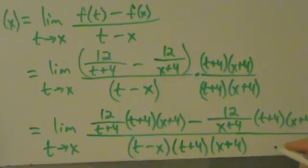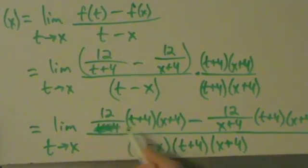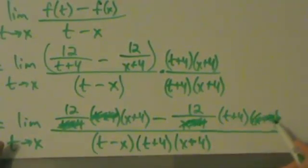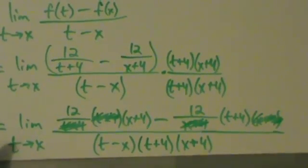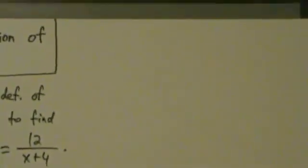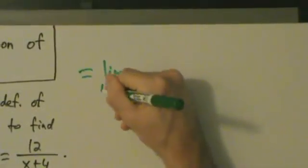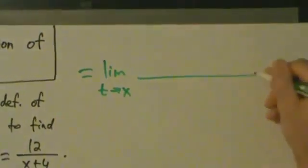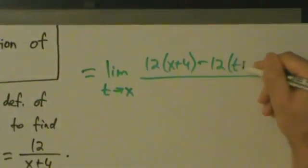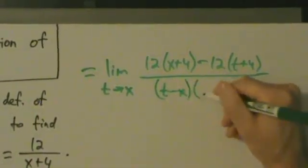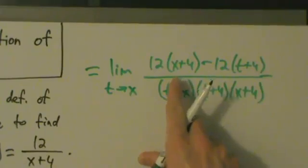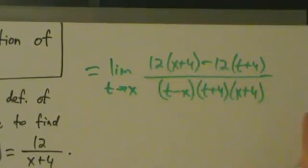Now let's simplify. 12 over t plus 4 times t plus 4 — the t plus 4's cancel. And 12 over x plus 4 times x plus 4 — the x plus 4's cancel. So on the top we have 12 times the quantity x plus 4, minus 12 times the quantity t plus 4. Notice there's a common factor of 12 that we can pull out from the top.